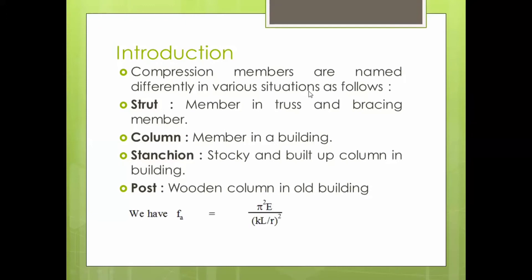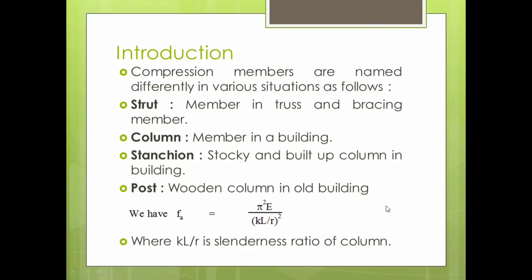As far as the evaluation of compressive force is concerned, we are aware of this equation from Euler's theory — the crippling load, given as π²EI / L², which has been modified as π²E divided by (KL/r)². Now, what is this term KL/r? KL/r is nothing but the slenderness ratio of the column.